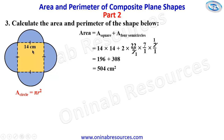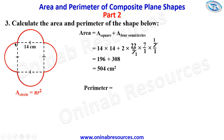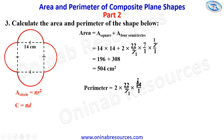We now go ahead to calculate the perimeter. For the perimeter, we find the distance around the shape. Starting from one point, we have the first semicircle, then the second, the third, and the fourth — all four semicircles form the circumference of two complete circles. The formula for the circumference of a circle is pi d. So we have 2 times 22 over 7 times 14 over 1. Seven gives 2, so 2 times 22 gives 44, and 44 times 2 gives 88. The perimeter is 88 centimeters. That's all for problem three.